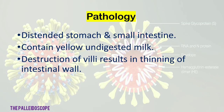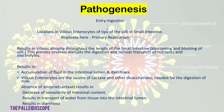Pathology: distended stomach and small intestine containing yellow undigested milk; destruction of villi results in thinning of the intestinal wall. Pathogenesis: entry is by ingestion of contaminated food and water. The virus localizes in villus enterocytes at the tips of the villi in the small intestine. Primary replication occurs here, resulting in villus atrophy throughout the length of the small intestine — shortening and blunting of villi.